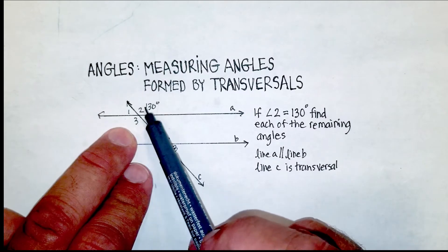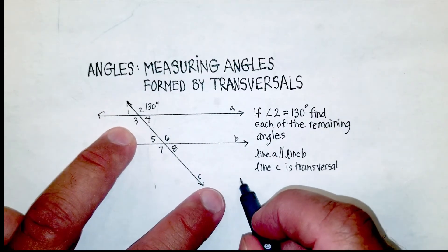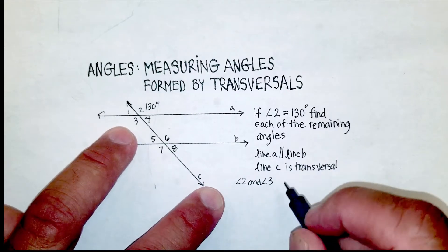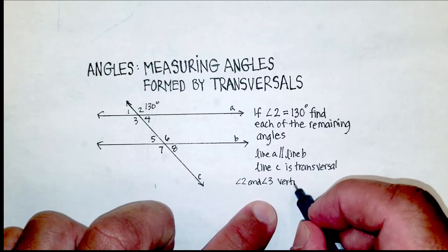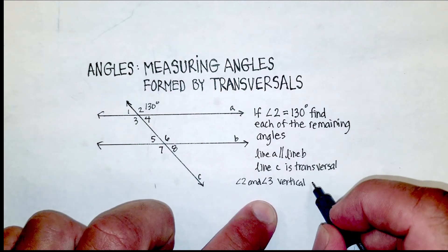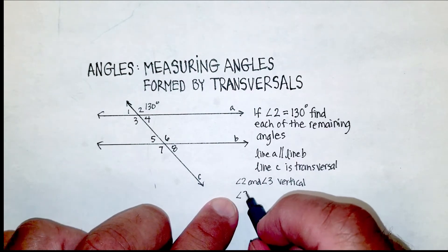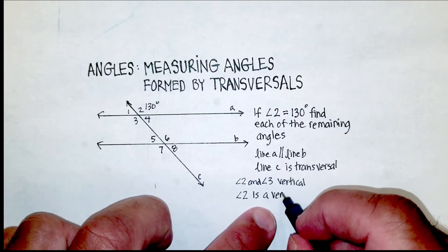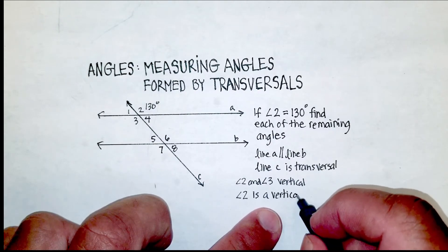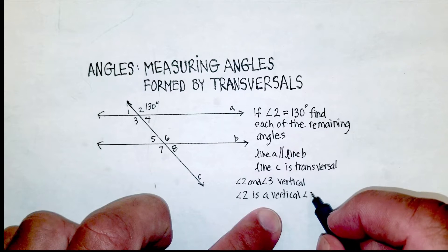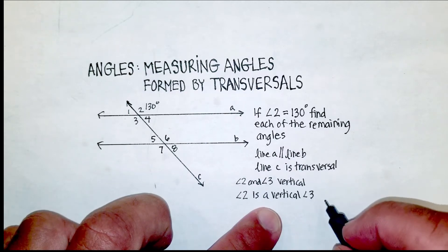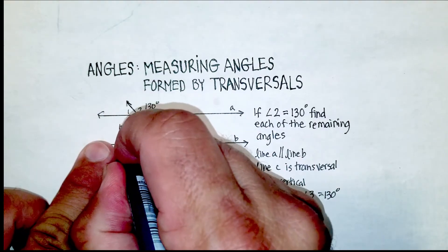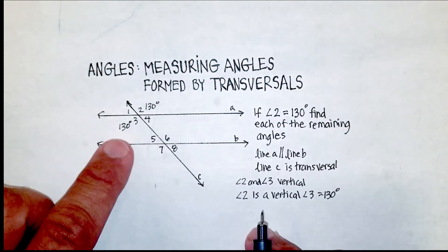Now, we know that angle two and angle three are what they call vertical angles, and vertical angles, as you remember, are congruent. So angle two is vertical to angle three. They are both 130 degrees. So we will go ahead and put 130 degrees for angle three.